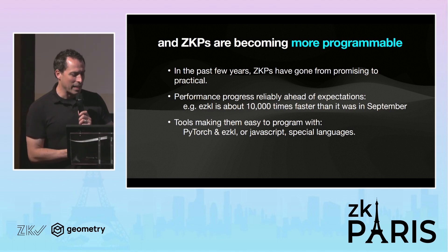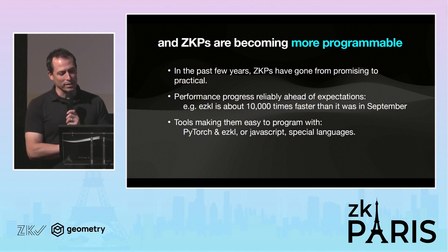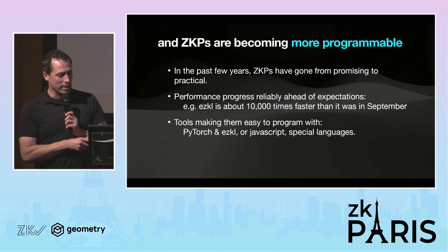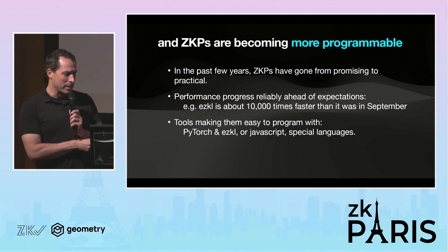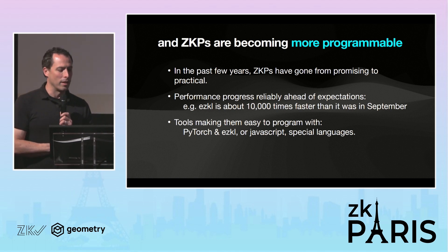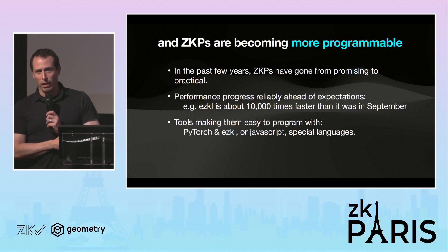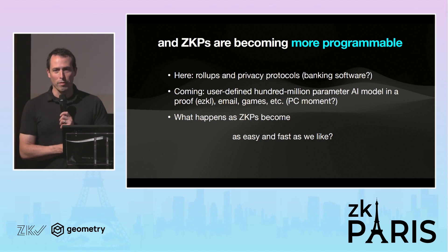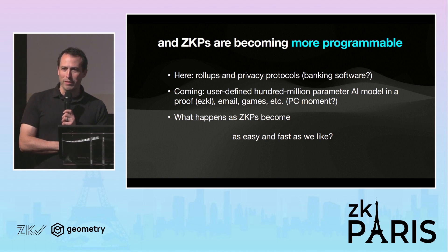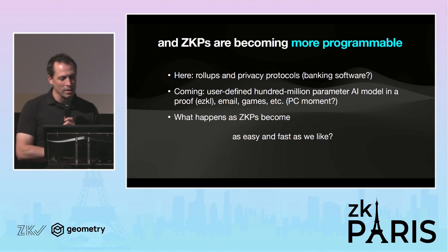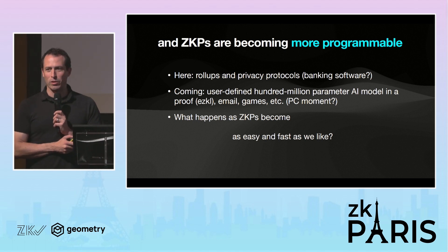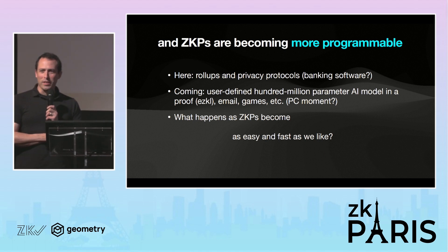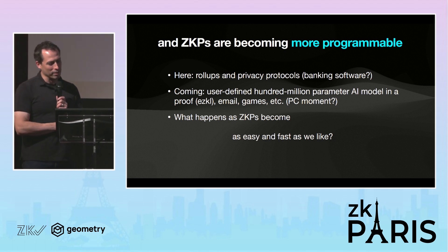Zero-knowledge proofs are becoming more programmable. In the last few years they've gone from promising things to practical things we're doing increasingly crazy stuff with. The program we work on, Ezekiel, is about 10,000 times faster than when we first demoed an MNIST inference proof verifiable on EVM in September. There are lots of tools being developed to make them easier to program with PyTorch and Python. We're kind of at a moment going from banking COBOL mainframe applications like rollups and privacy protocols to a hobbyist PC Cambrian explosion level of programs — putting giant parameter models in, doing games, email, all very experimental.